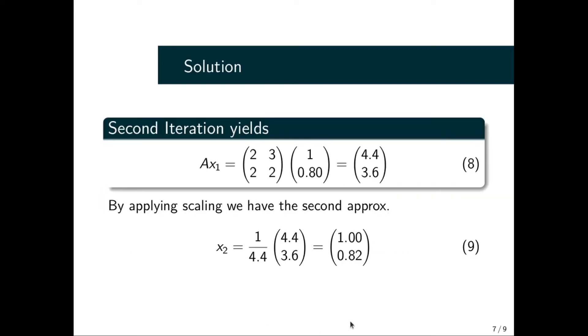Then based on x₁, we have Ax₁, we multiply it again and get this value that we have seen here. We consider and find the maximum value from this column vector, which is 4.44, and we scale it, which gives us equation (9).